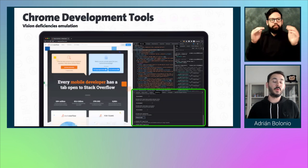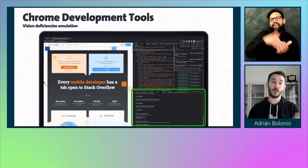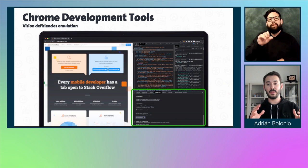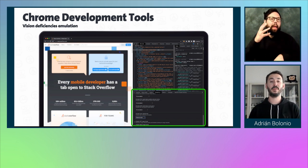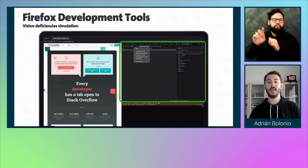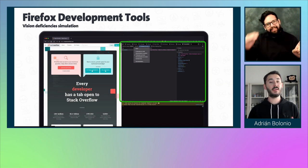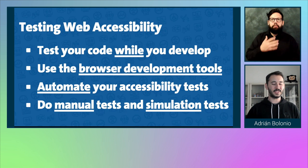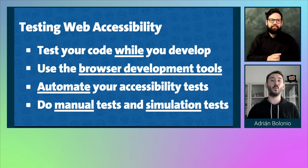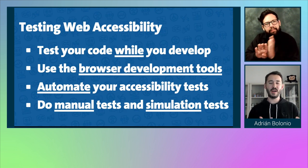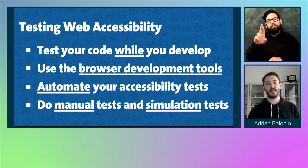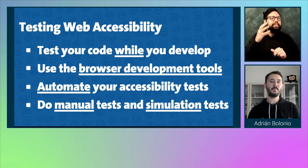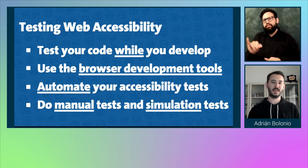Chrome and Chromium also have a vision deficiencies emulation tool found under Rendering in developer tools. Firefox has the same tool under the Accessibility tab in developer tools. These are very good tools for simulation testing. To summarize my recommendations: test your code while you develop; use the browser development tools — they are very powerful; automate your accessibility tests; but don't forget to do manual and simulation tests. They are equally important and will find very different accessibility issues.